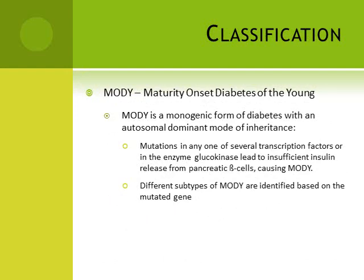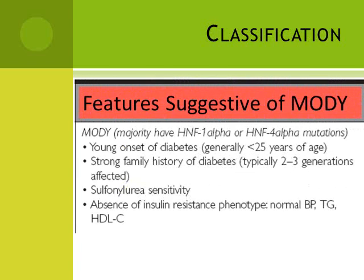MODY — Maturity Onset Diabetes of the Young — is the inverse of LADA: it is a type 2 sort of diabetes diagnosed early. MODY is a monogenic form of diabetes with an autosomal dominant mode of inheritance. Mutations in any one of several transcriptional factors or in the enzyme glucokinase lead to insufficient insulin release from pancreatic beta cells. Features suggestive of MODY include young onset of diabetes, generally less than 25 years of age, and strong family history typically across two to three generations.